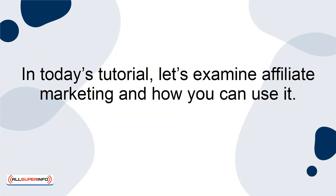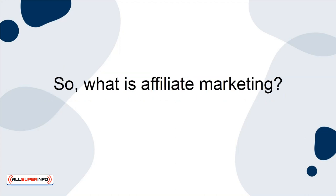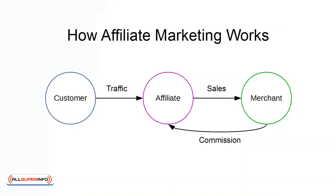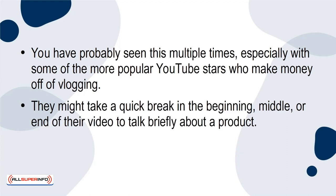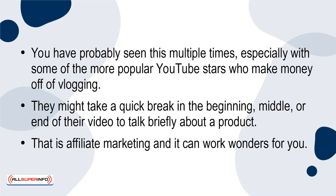In today's tutorial, let's examine affiliate marketing and how you can use it. Simply put, affiliate marketing is when a content creator promotes another company's product or services in return for a commission of the sales generated. You've probably seen this multiple times, especially with some of the more popular YouTube stars who make money off of vlogging. They might take a quick break at the beginning, middle, or end of their video to talk briefly about a product. That is affiliate marketing, and it can work wonders for you.